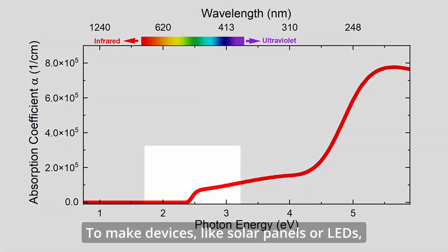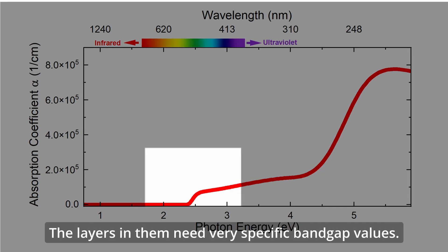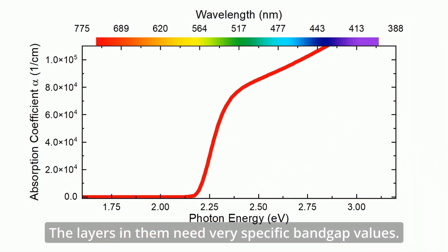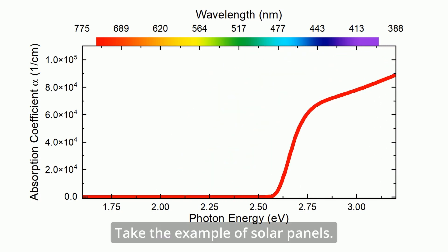To make devices like solar panels or LEDs, the layers in them need very specific band gap values. Take the example of solar panels.